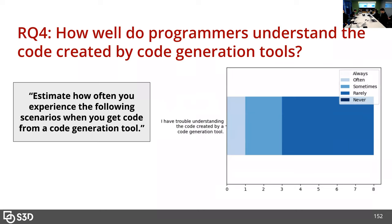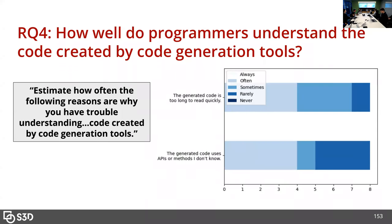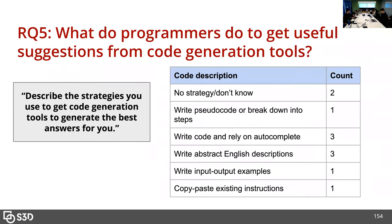In terms of why programmers choose to use code generation tools, what we're seeing so far is that people are really just trying to make their lives easier — they're not really using it to discover potential ways to write a solution, which is what some prior literature is interested in. For RQ4 — how well do programmers understand code written by code generation tools? — most people don't seem to have much trouble actually reading the code, so understanding doesn't seem to be a huge usability issue. There's a wide variety of strategies that people use to get useful suggestions, and I'd be willing to dig into that more with interview protocol.